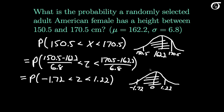I'll let you verify using software or a standard normal table that this area is, to three decimal places, 0.846. This implies that the area under the original distribution between 150.5 and 170.5 is also 0.846, and the probability that a randomly selected adult American female has a height between 150.5 and 170.5 cm is approximately 0.846.